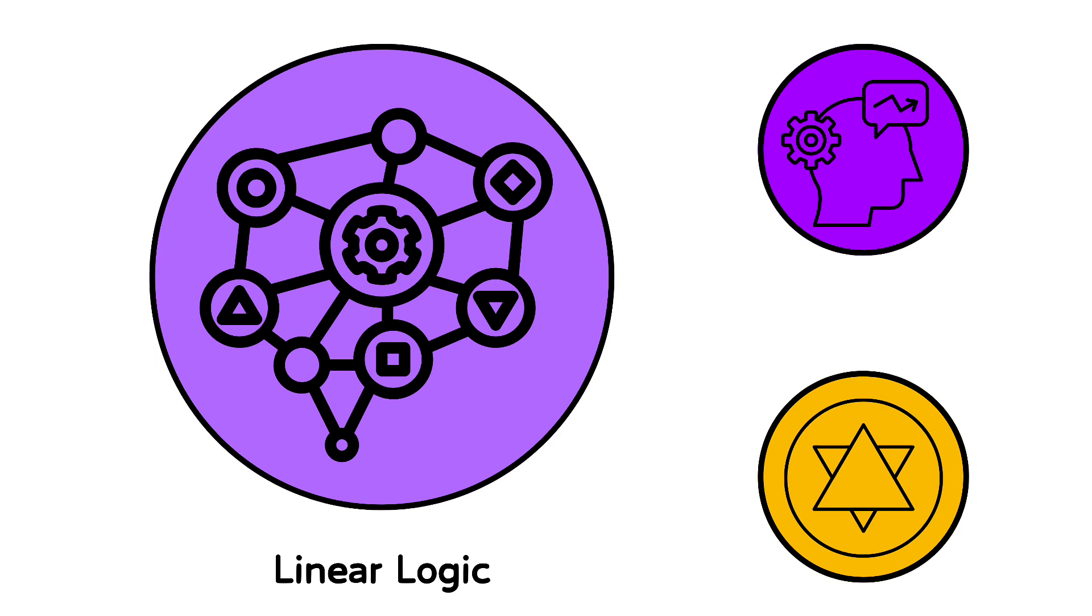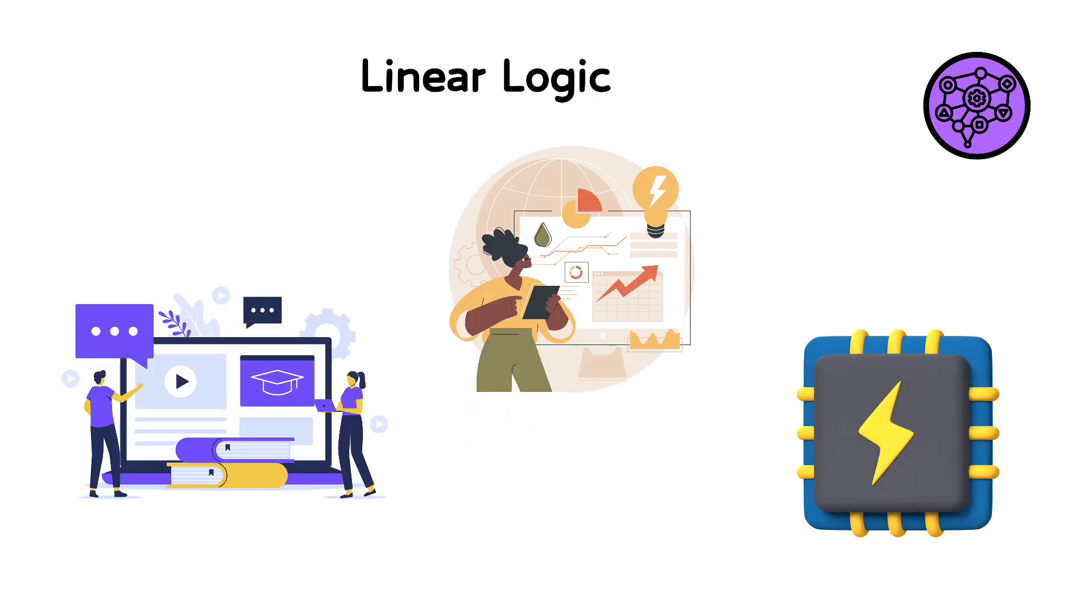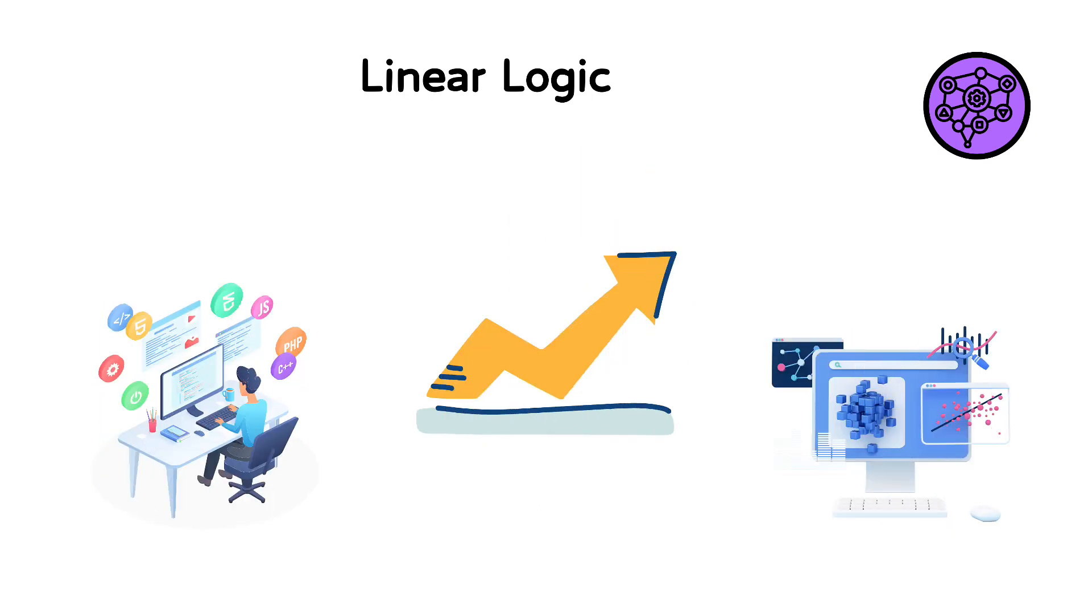Linear logic is a refinement of classical logic which considers not just whether statements are true or false, but also the resources involved in stating them. It introduces a notion of consuming and producing resources when propositions are used in proofs. This is especially useful in programming and systems design, where managing resources like memory and processing power is crucial. For example, linear logic can help ensure that a computer program does not use more resources than it frees up, leading to more efficient and reliable software.